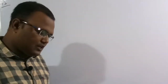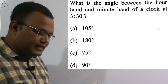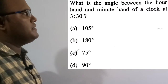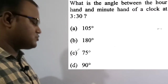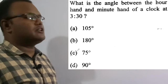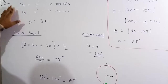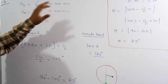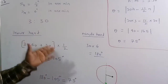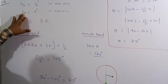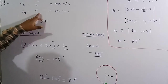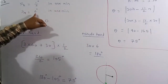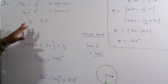Now solving the 13th question: what is the angle between the hour hand and minute hand of a clock at 3:30? Option A, 75 degrees, is the correct answer. The speed of the hour hand is 0.5 degrees per minute, and the speed of the minute hand is 6 degrees per minute.